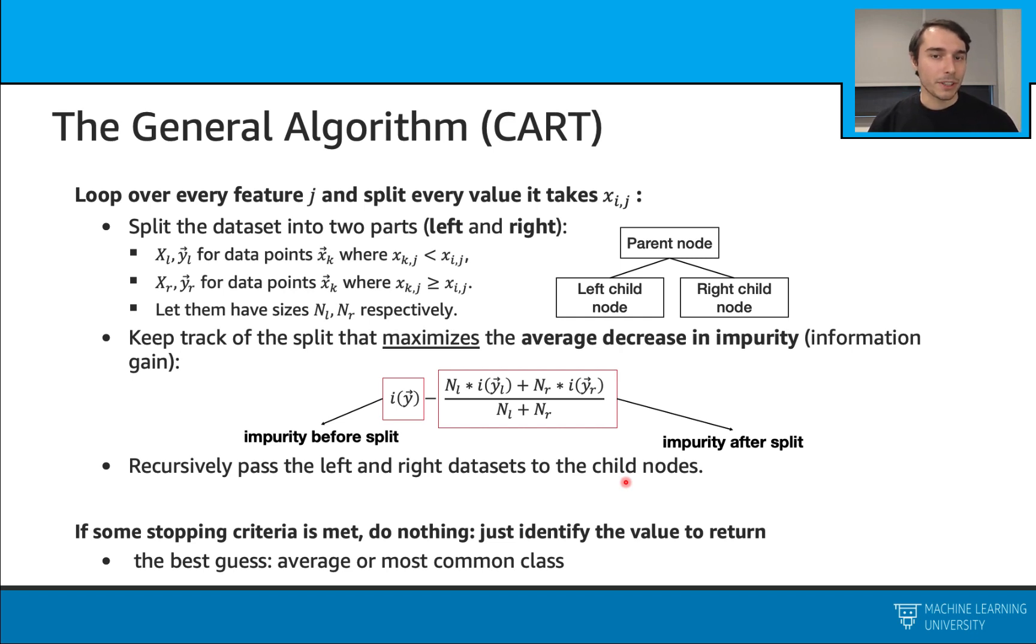If we hit some stopping criteria, we need to decide what to return at that point. For the regression problems, we will take the average. And for the classification problems, we will just take the most common class.